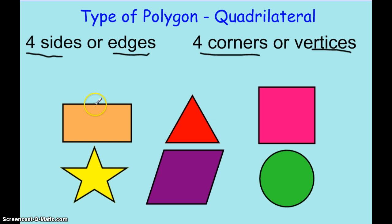So I can see that this rectangle here has 1, 2, 3, 4 sides and 1, 2, 3, 4 corners. So it is a quadrilateral.